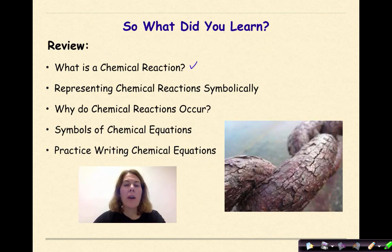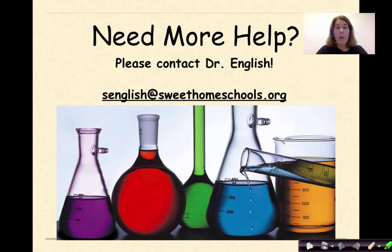So what did you learn? We talked about what is a chemical reaction, we looked at representing chemical reactions symbolically, we talked about why do chemical reactions occur, which was all about stability, some symbols associated with chemical equations, and finally we did a little bit of practice writing chemical equations at the end. Need more help? Feel free to contact me. Have a great day.